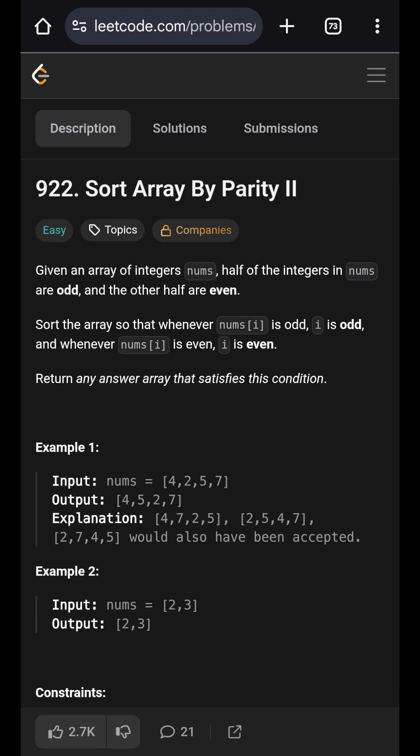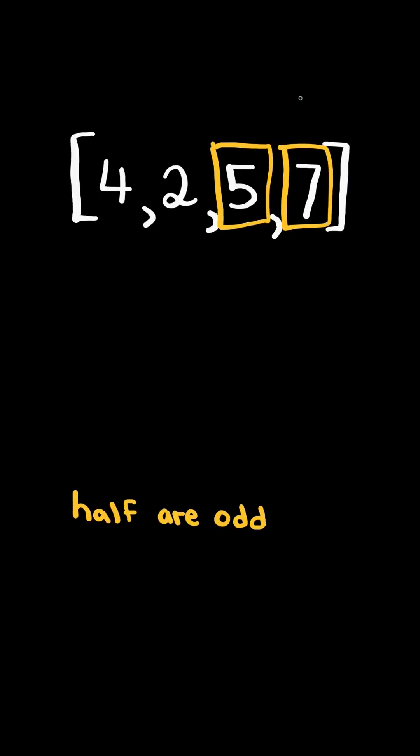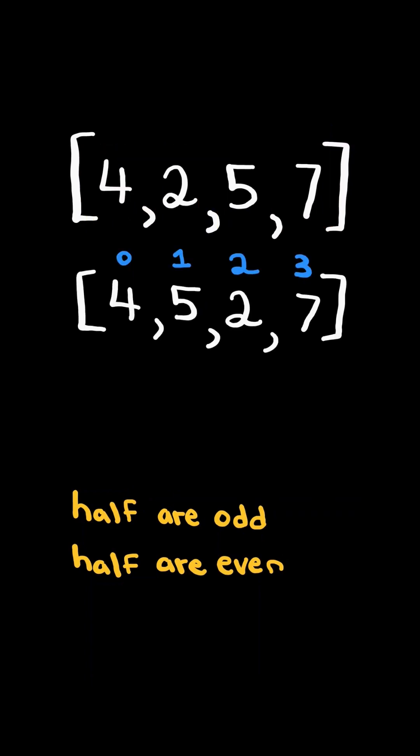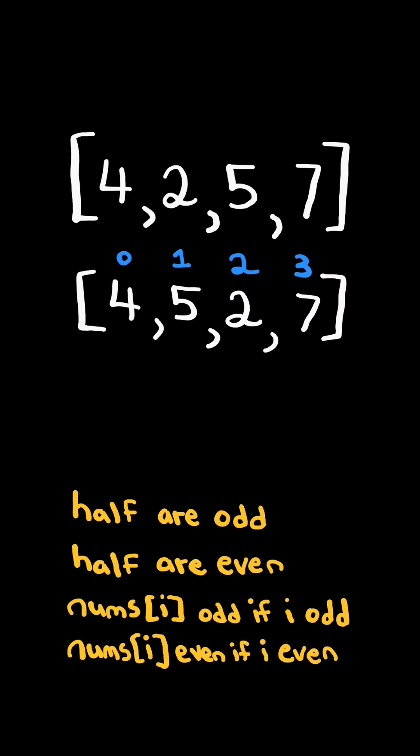Sort array by parity 2. Given a list of numbers, half the numbers are odd and half the numbers are even. Return an output array such that the value at the index is odd if the index is odd and the value at the index is even if the index is even.